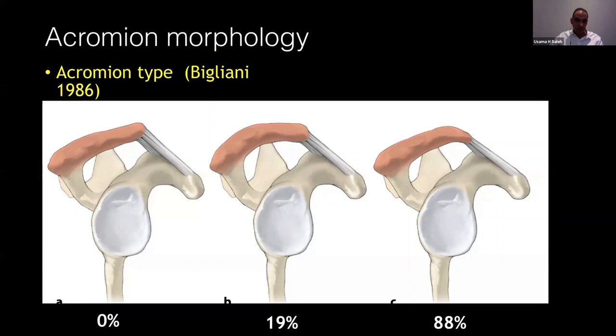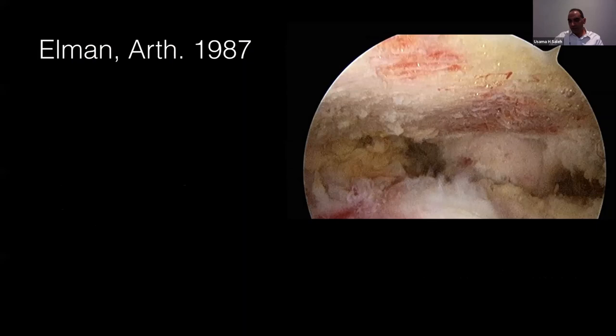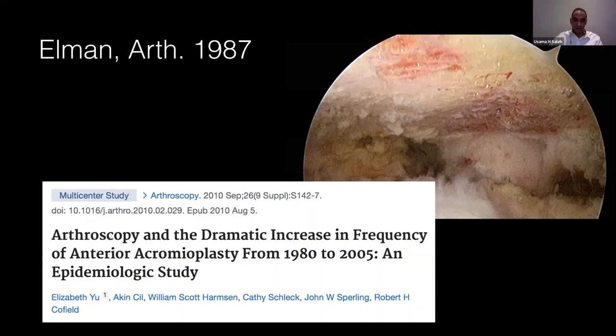Because of this, Bigliani started believing in the sub-acromial impingement syndrome, or the extrinsic theory — meaning most of the problem for the cuff is coming from outside, either because of the shape of the acromion, the AC joint osteophyte, or the CA ligament being hypertrophied, calcified, or very tight. Later, Dr. Ellman took acromioplasty from open to arthroscopic, and since then there was a dramatic increase in the frequency of acromioplasty through the late 1990s.